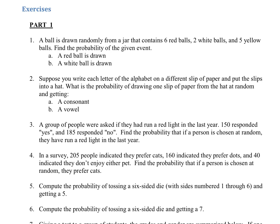All right, we're going to take a look at probability part one. For question number one, we have a ball that is drawn randomly from a jar that contains six red balls, two white balls, and five yellow balls. We're going to find the probability of the given event. So we're talking about a red ball being drawn. There are six red balls out of the total that we have, which is six plus two plus five. That's 13. So six out of 13 is the probability that a red one's drawn.